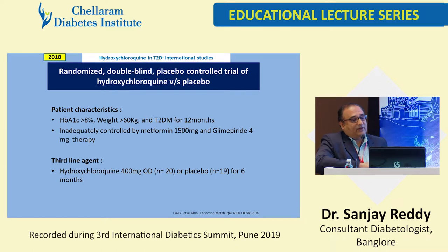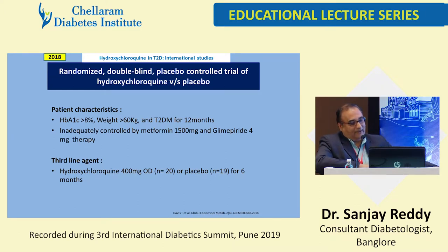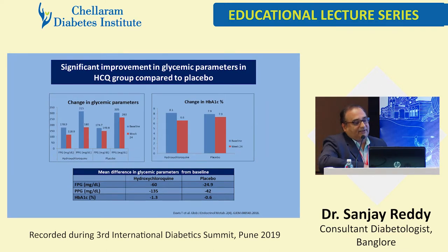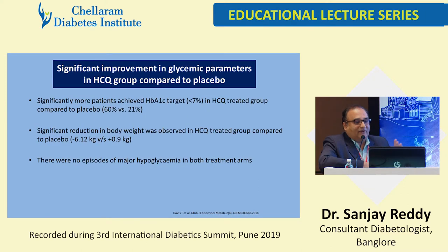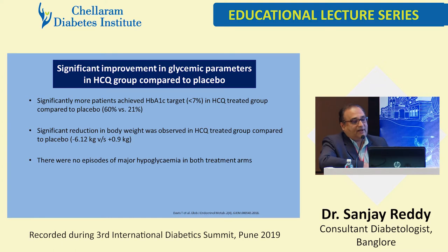A randomized double-blind placebo-controlled trial of hydroxychloroquine versus placebo was conducted in type 2 diabetes patients of more than 12 months duration, inadequately controlled on two drugs — metformin and glimepiride. Twenty patients were randomized to receive HCQ 400mg or placebo. There was a significant reduction in glycemic parameters — both fasting, postprandial, and A1C of minus 1.3% compared to placebo at minus 0.6%. There were no major hypoglycemic episodes in either treatment arm.